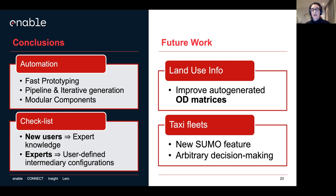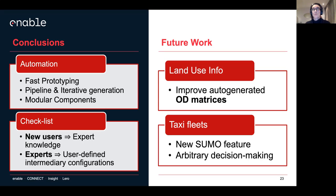Considering future work, I'm trying to use land use information to improve the auto-generated OD matrices. If I know that the land use is commercial, it's more likely that if you define a primary location as work you can go there, or a secondary location as shopping, and so on. The real issue is that land use in OpenStreetMap is well defined but poorly used, so I have to work on a heuristic for that.